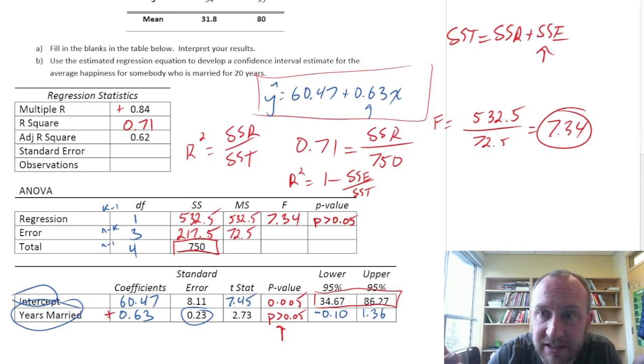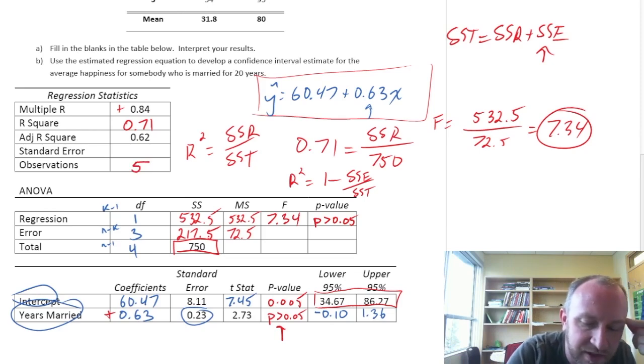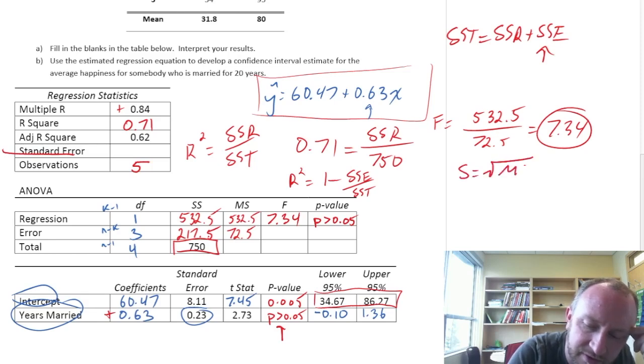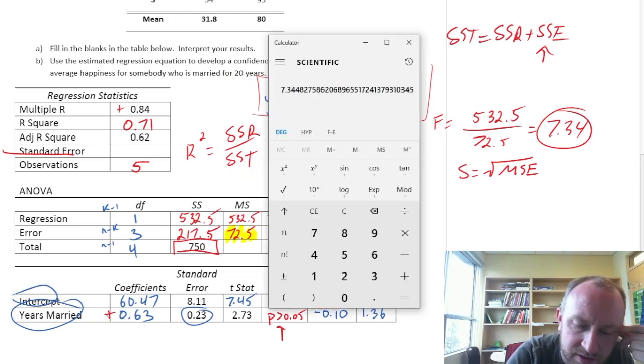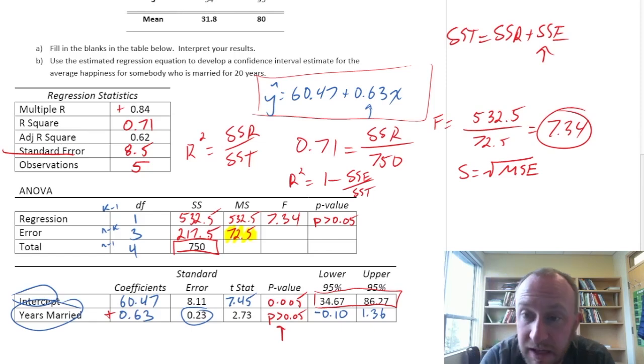Filling in the rest of our regression statistics. Let's see, observations, this got deleted somewhere. We have 5 observations. That standard error, this is just the square root of MSE. MSE we calculated earlier to be 72.5. So if we just take the square root, 72.5 square root that, and I have 8.5. So this is going to be 8.5. And there's our complete table.